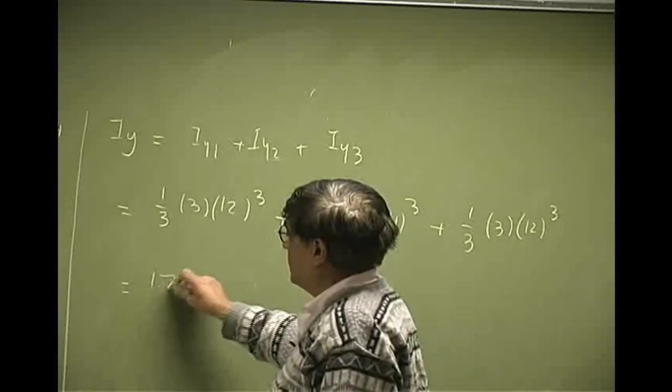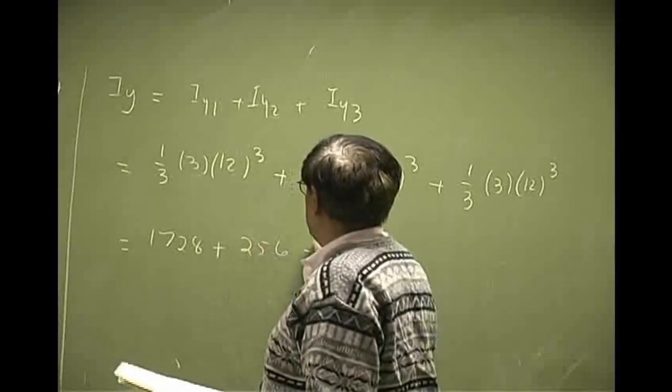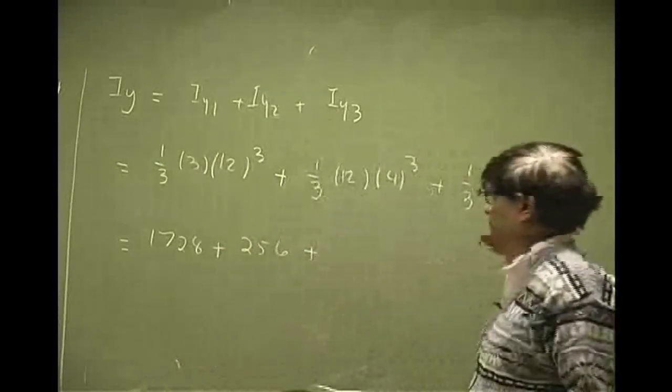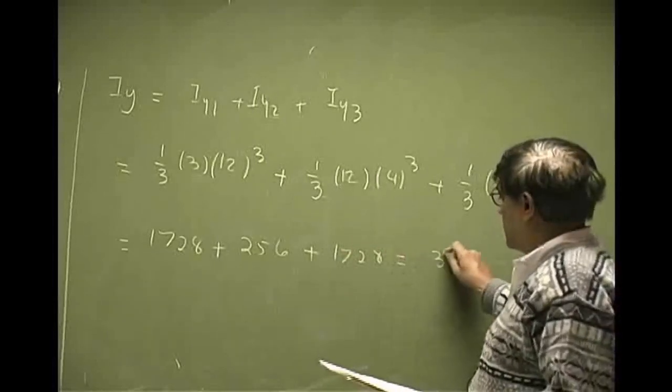We get 1728 plus 256, then you're going to have 1728. It comes out to be 37/12.